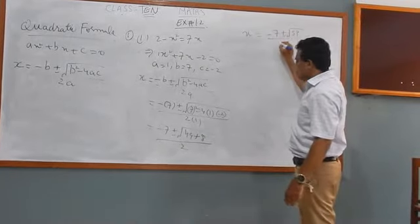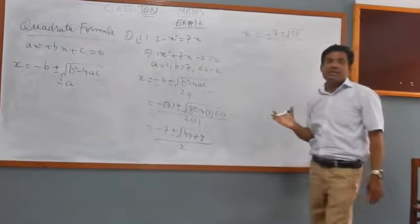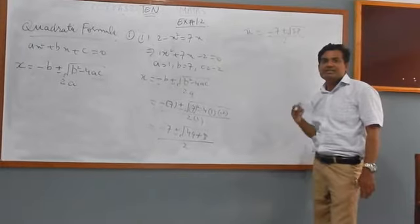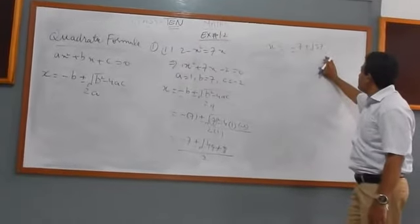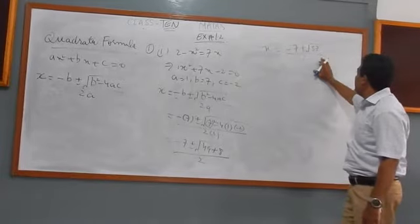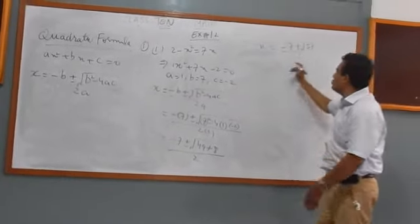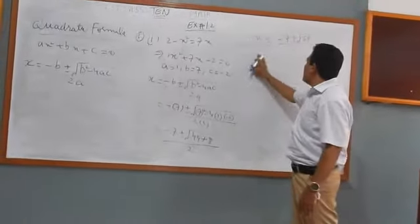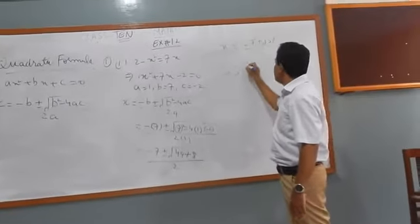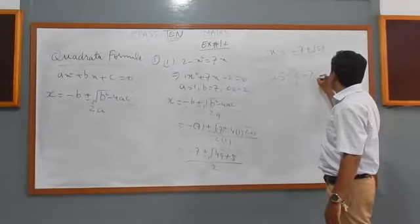So we get minus 7 plus minus root 57 over 2. Now 57 is a prime number and cannot be factored further, so this is the answer.